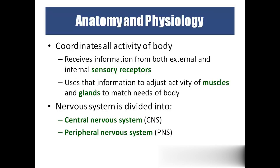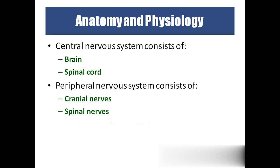Coming to anatomy and physiology: all body activities are coordinated by the brain and spinal cord. It receives information from both external and internal receptors. External receptors include receptors for vision, smell, taste, touch, temperature, pressure, and pain. That information goes to the brain for processing, and finally we react with the help of muscles and glands. The whole nervous system is divided into two parts: central nervous system (brain and spinal cord) and peripheral nervous system (cranial nerves and spinal nerves).